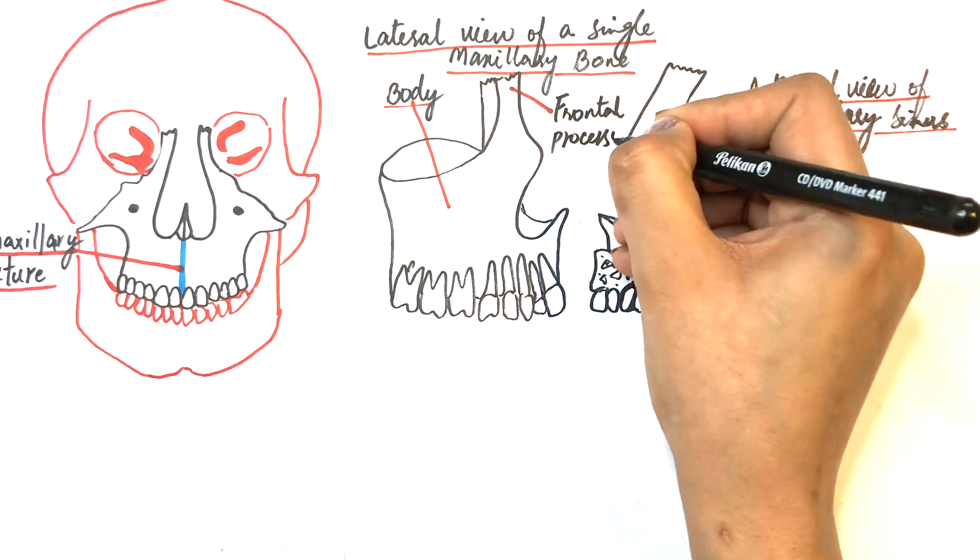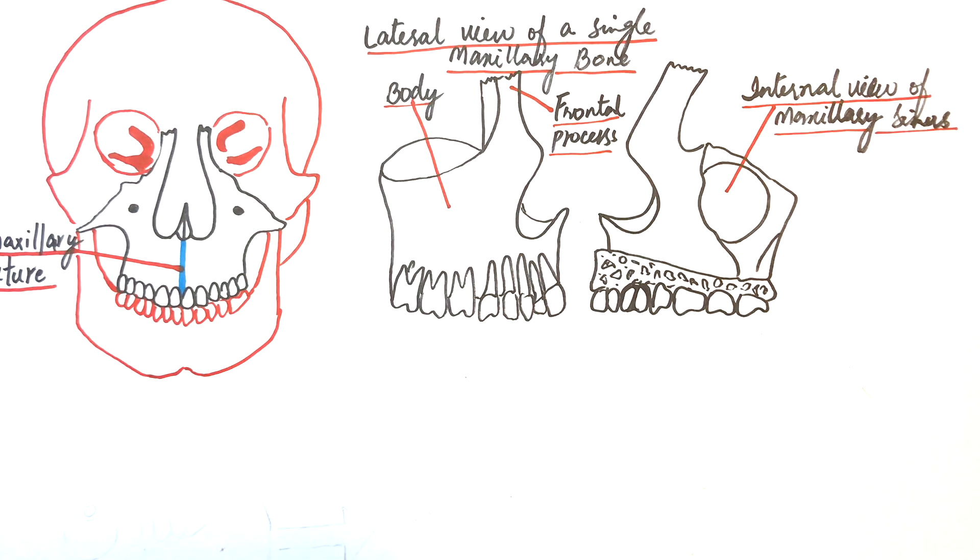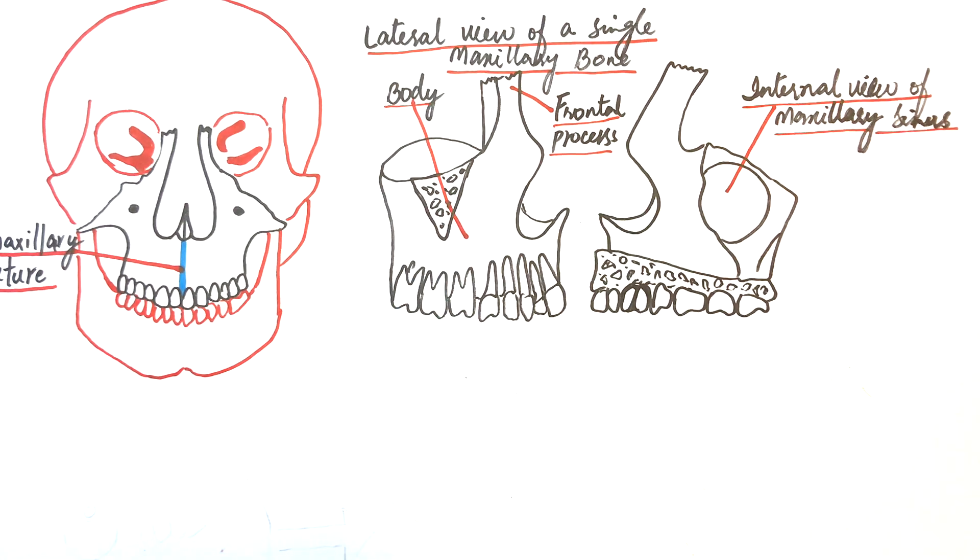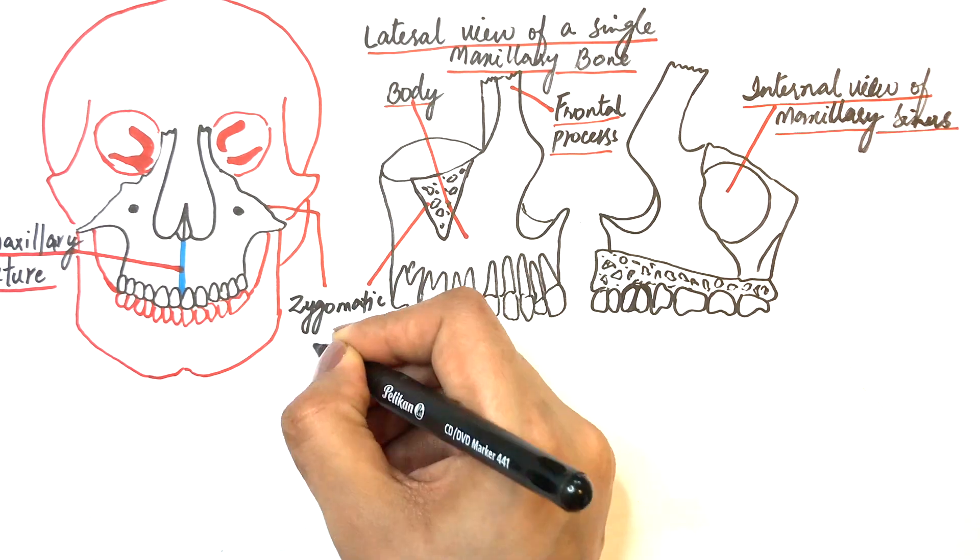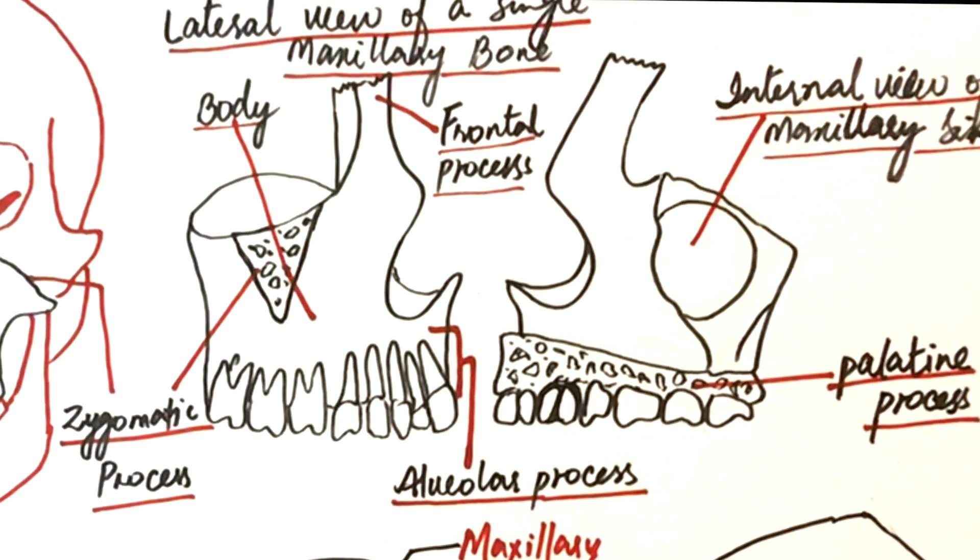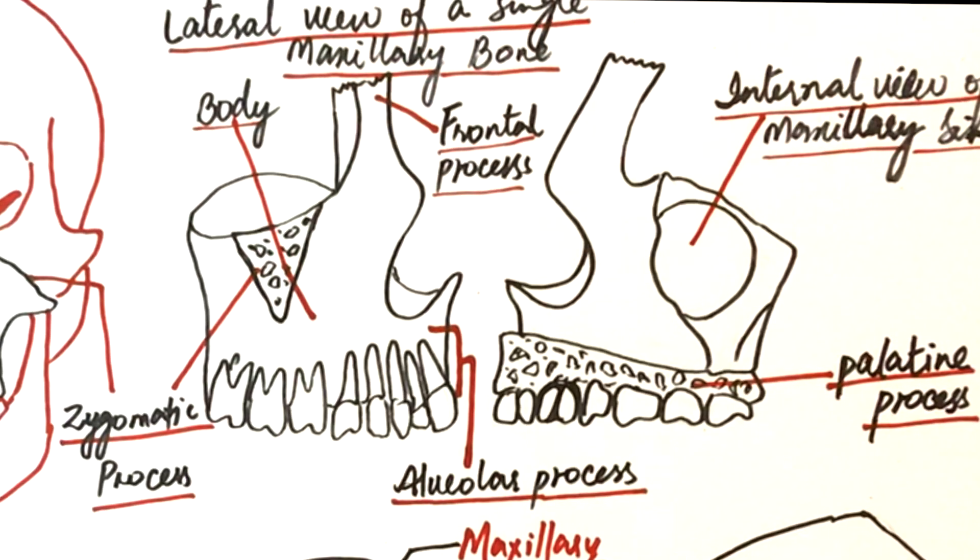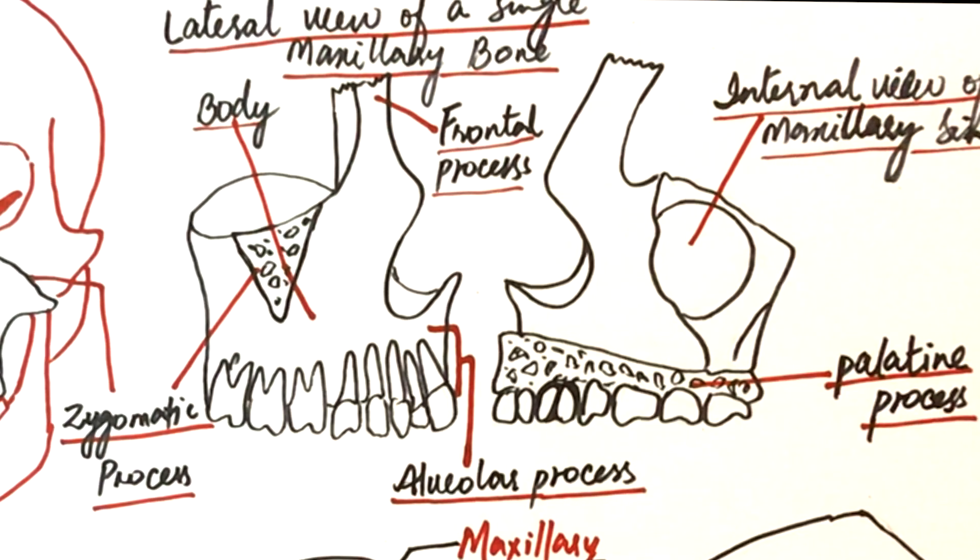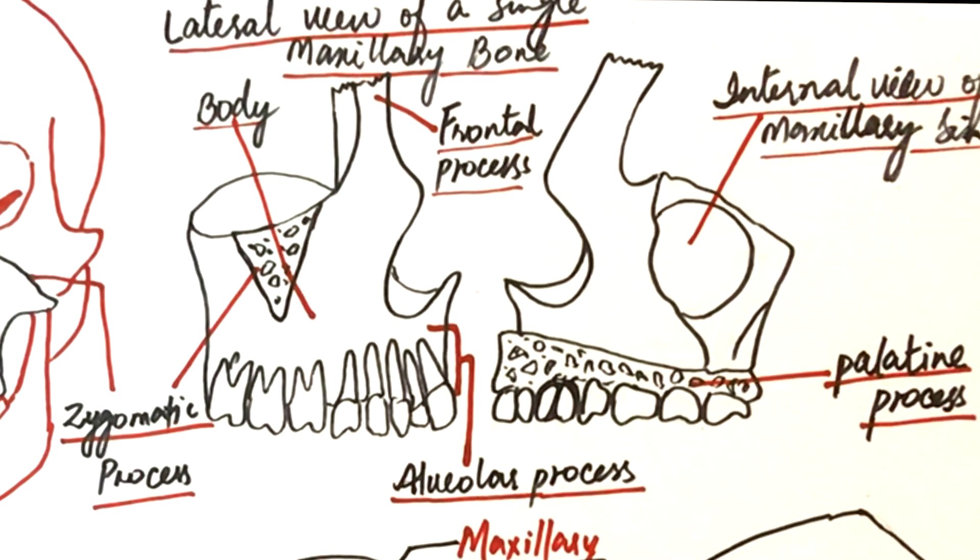The processes each maxilla has are the frontal, the zygomatic, the alveolar, and the palatine process. The frontal process articulates with the frontal bone. The zygomatic process unites with the zygomatic bone. The alveolar process includes tooth sockets of upper teeth, and finally, the palatine process joins with the palatine bone and forms the anterior two-thirds of the palate.